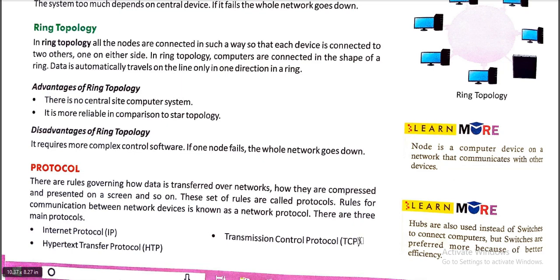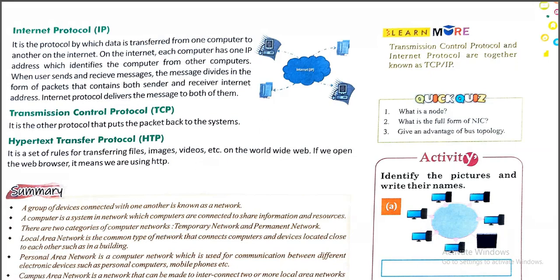The first is Internet Protocol, IP. It is the protocol by which data is transferred from one computer to another on the internet. On the internet, each computer has one IP address which identifies it. When users send and receive messages, the message is divided into packets that contain both the sender's and receiver's internet address. Internet Protocol delivers the message using those addresses. If another person wants to download files or resources, they can note that address and download to their computer.